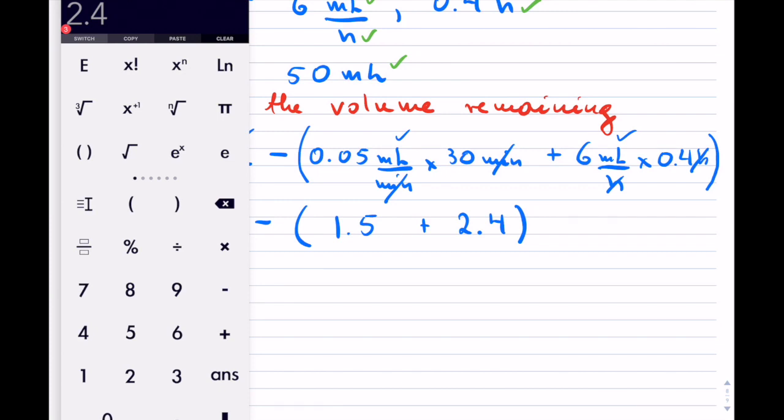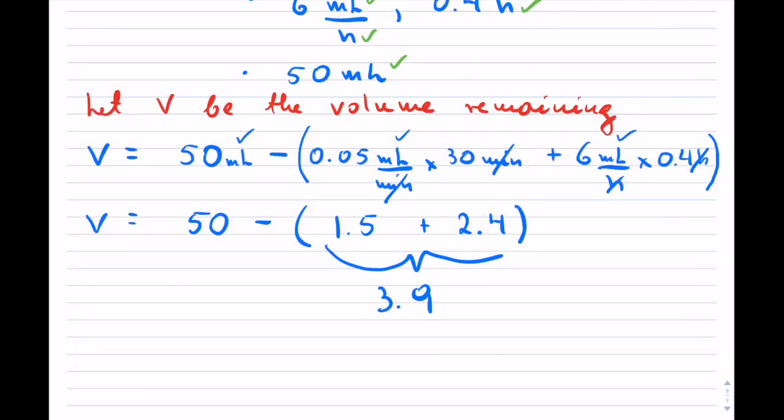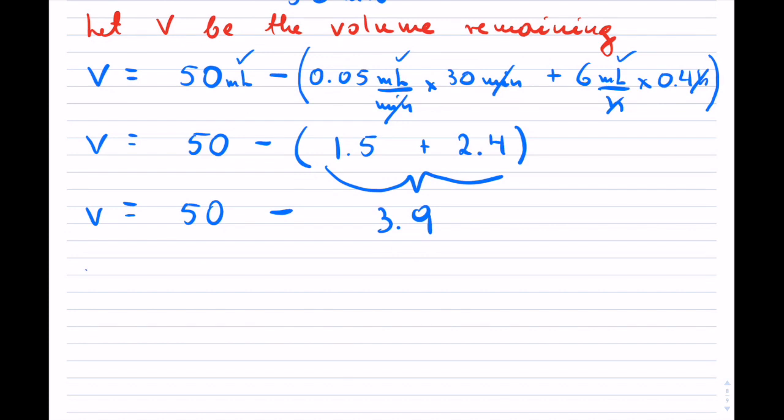So, that's how much they used in total. Now, I can add those up, actually. I can do that on the calculator. It's 3.9, and so that will be V equals 50 minus 3.9, and that will be 46.1 milliliters remaining.